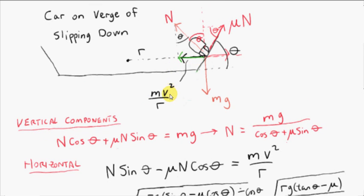So when the car is on the verge of slipping down, for this given radius r, its speed is at its minimum. We minimize the resultant force by maximizing this upward force FCG. FCG had a maximum value of mu times N. By maximizing the magnitude of this force, we take away from the component of N pointing toward the center, minimizing the resultant force and thus minimizing the speed for a given m and r.